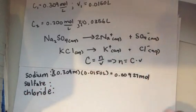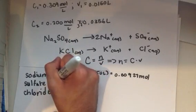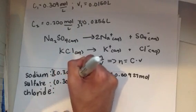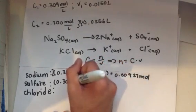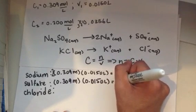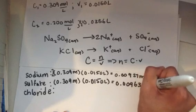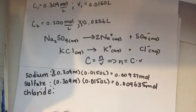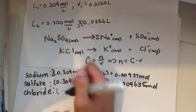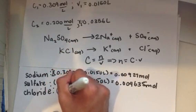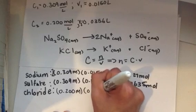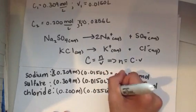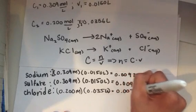For sulfate, we do the same thing — there's no additional coefficient. The concentration and volume are the same as before (0.309 M and 0.0150 L), giving us 0.004635 moles of sulfate ion. For chloride, using the second equation with coefficient 1, we use the concentration of the second solution: 0.200 molar times 0.0356 liters, which gives 0.00712 moles of chloride ion.